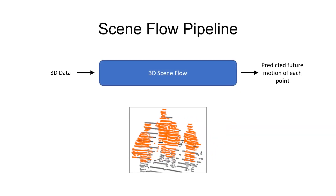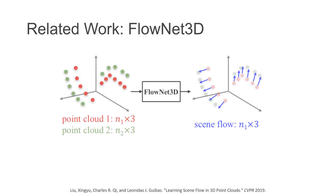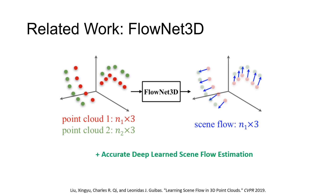Using Scene Flow — the 3D analog of optical flow — we compute a 3D motion vector for each point in the scene, removing any reliance on object segmentation. Scene Flow Estimation is a growing area of research, and like many vision problems, deep-learning methods have provided the most accurate results.